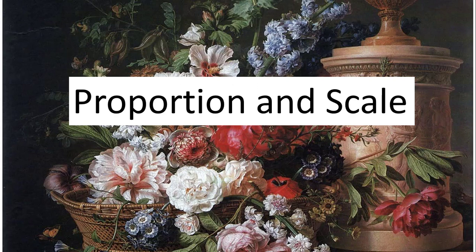Proportion, on the other hand, is the relationship of parts to the whole. We often study the human body because the relationship of the arm to the leg to the torso are relationships of those parts. We could also talk about different objects within a work of art showing varied proportions. So let's look at some examples.